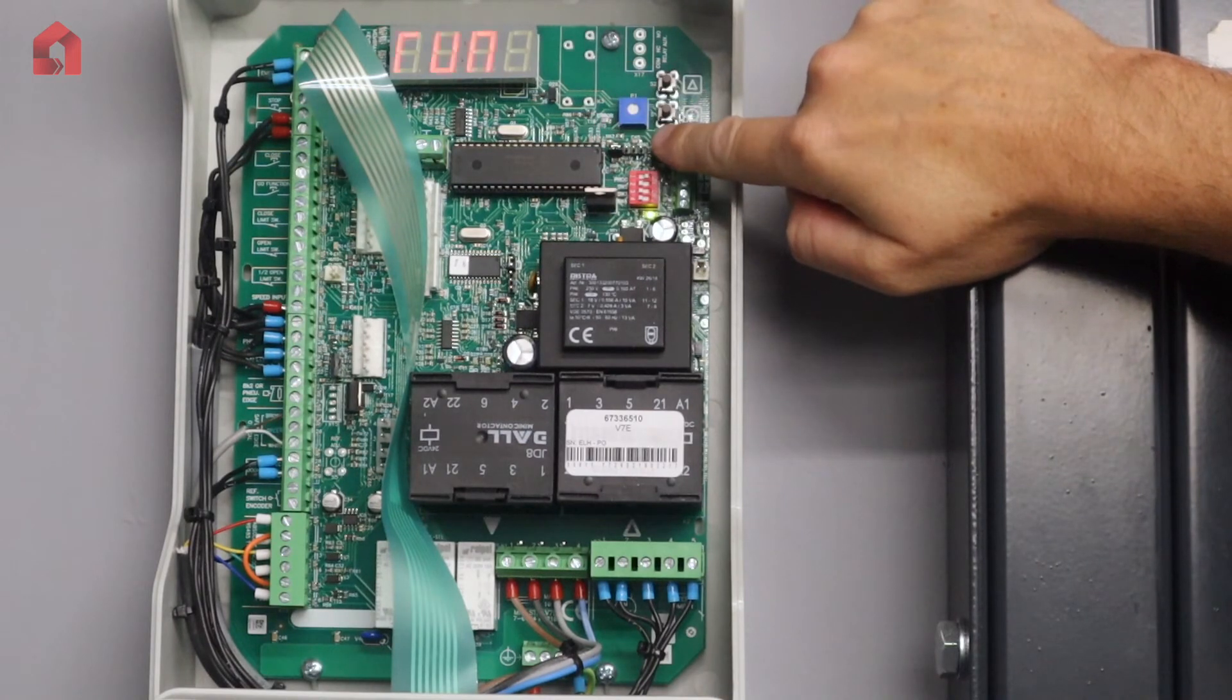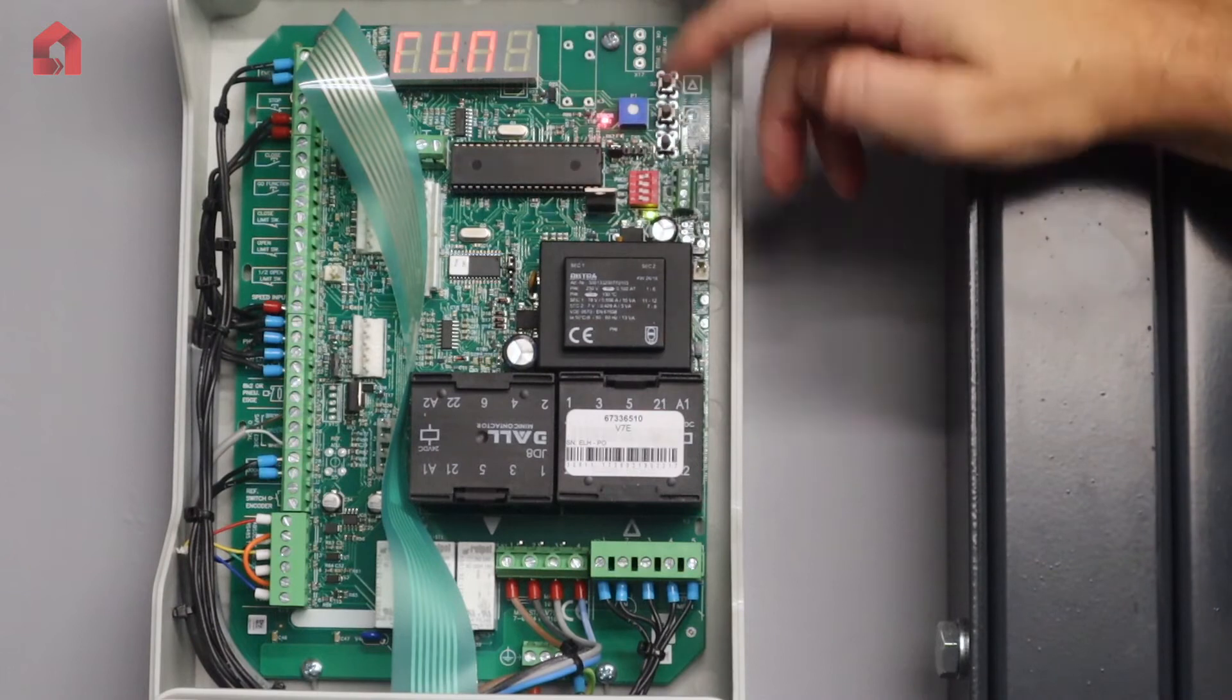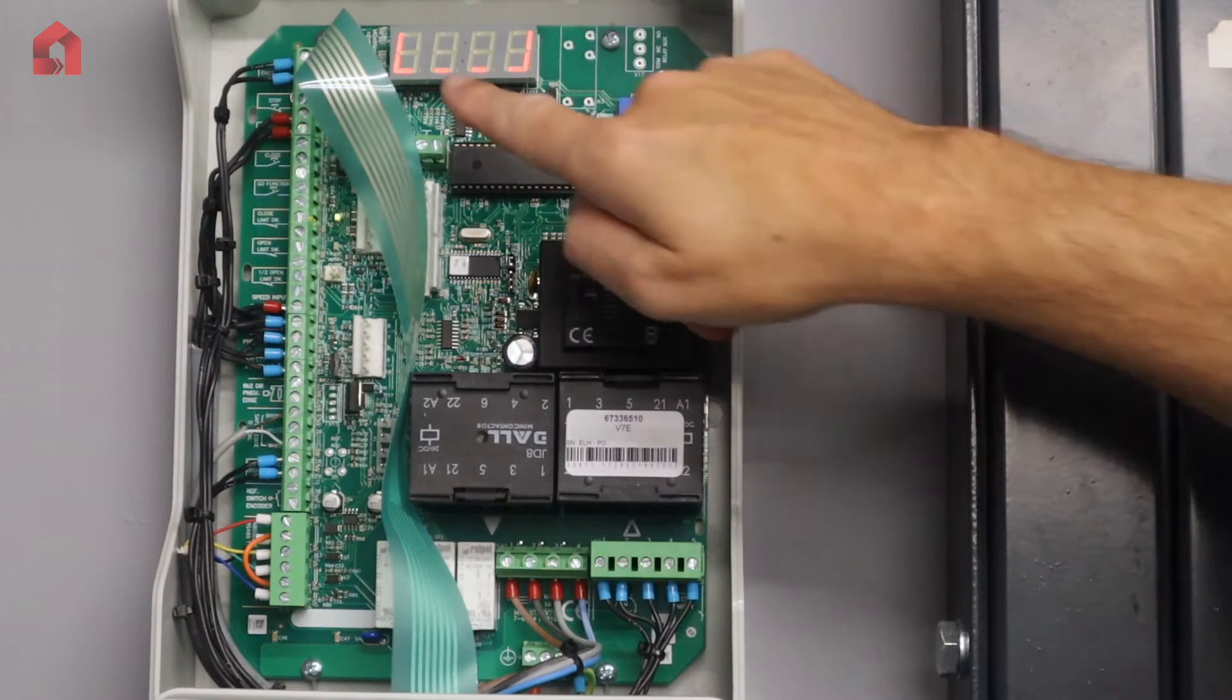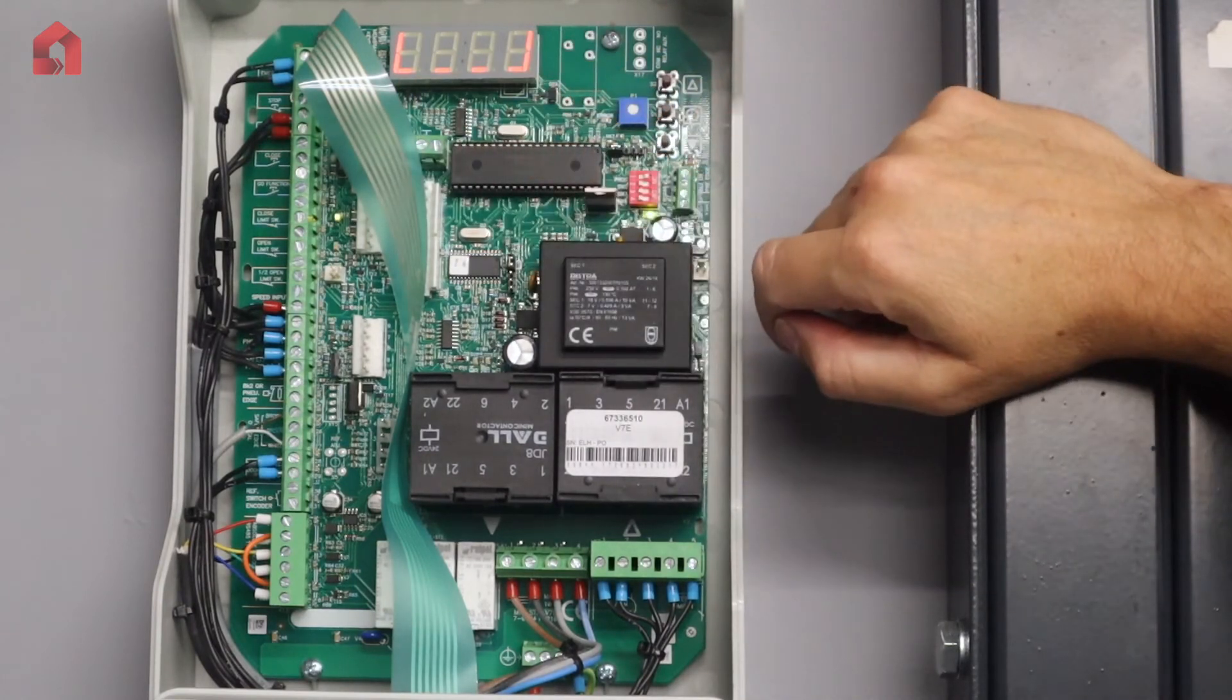Again, it's always in dead man operation. So where you've got it to where you want it, again you just literally press your stop to confirm it, says my bottom limit is now set, and then it goes back to parameter 14.